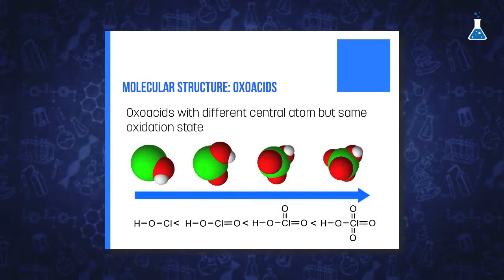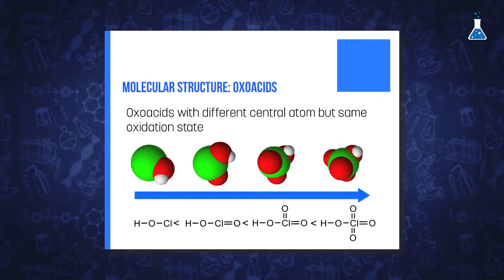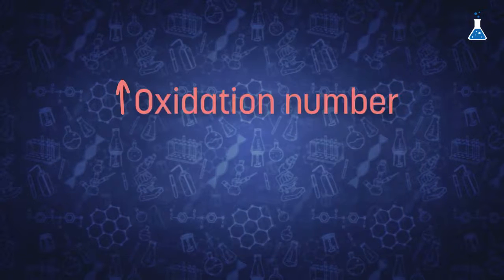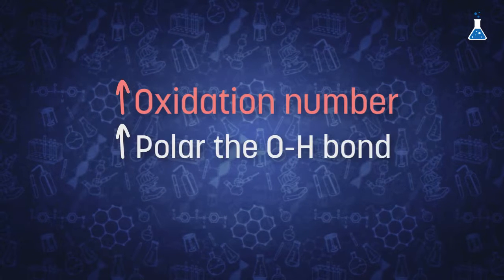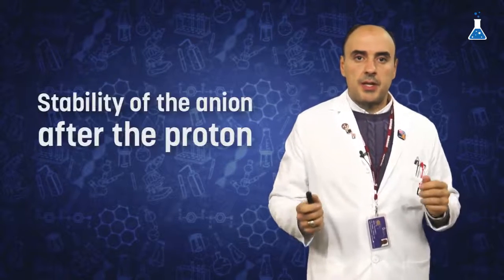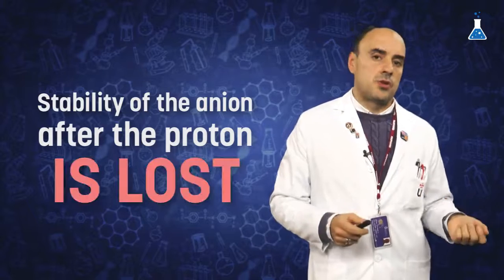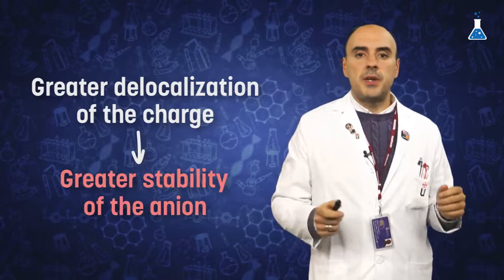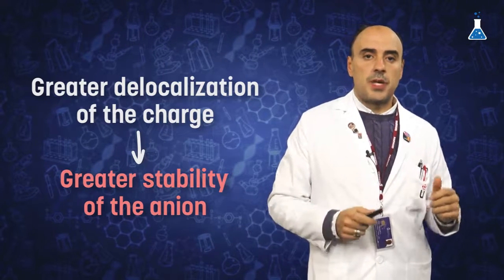In addition, if we compare two oxoacids with the same central atom and different oxidation number, we can deduce that the higher the oxidation number, the more polar the oxygen-hydrogen bond and therefore the more acidic. Another way of viewing this concept is to consider the stability of the anion after the proton is lost. A greater delocalization of the charge will lead to greater stability of the anion once the proton is removed. The delocalization increases when the number of oxygen atoms is higher, so we reach the same conclusion.